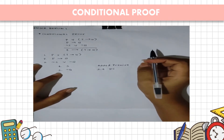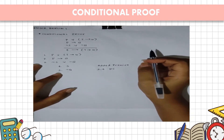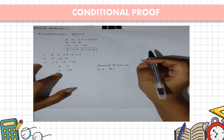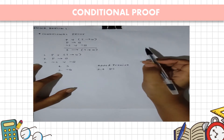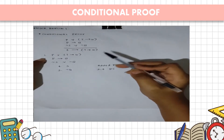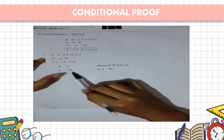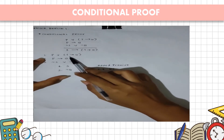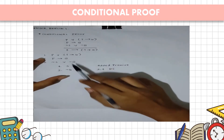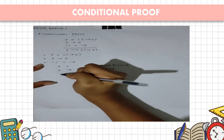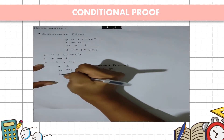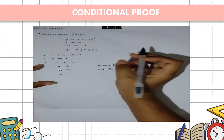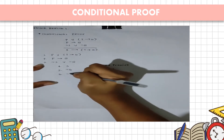Now with premise 2, we use modus tollens on premises 2 and 5. As you can see, both involve Q. Applying modus tollens gives us not P.